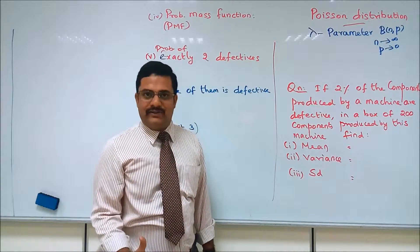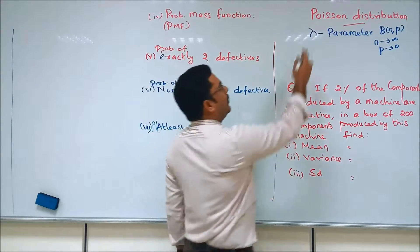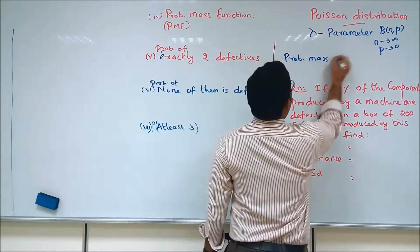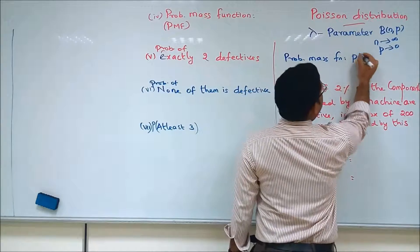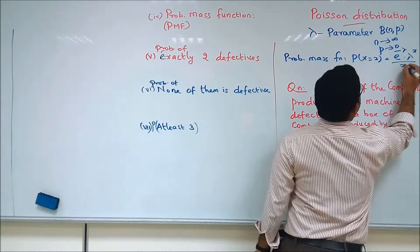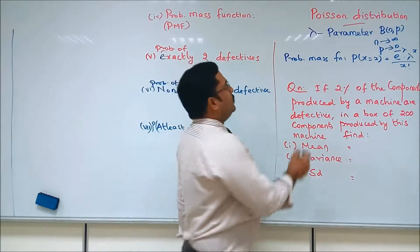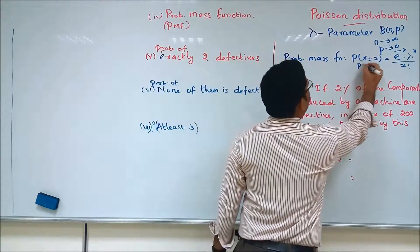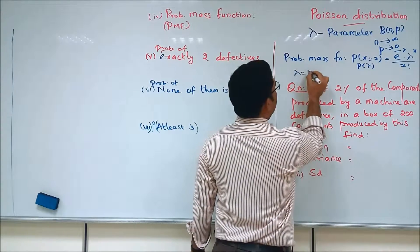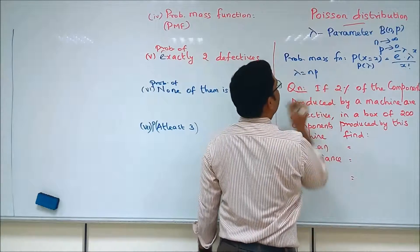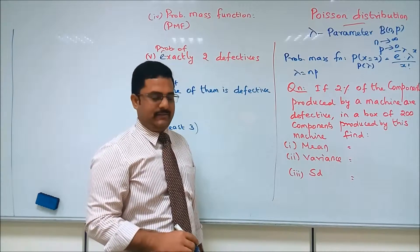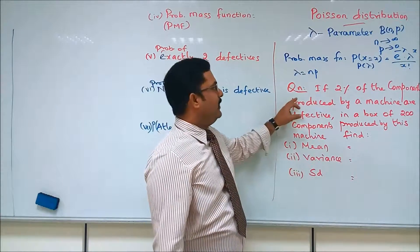We can call this as the distribution for finding probabilities of rare occurrences. The probability mass function of the Poisson distribution is given by e to the power minus lambda, times lambda power x, divided by x factorial. We can call this P of lambda, because the parameter here is lambda. Lambda is the product of n into p, where n is the number of items and p is the probability of success.